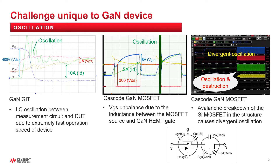GaN power devices are becoming popular in power electronics applications because of their low energy loss and high power density capability. But engineers are still struggling to evaluate their dynamic characteristics. Due to the fast switching feature of the GaN devices, parasitic inductance in the test circuit easily causes huge ringing or oscillation of the device, sometimes leading to device destruction. That makes the dynamic test of GaN devices really difficult.